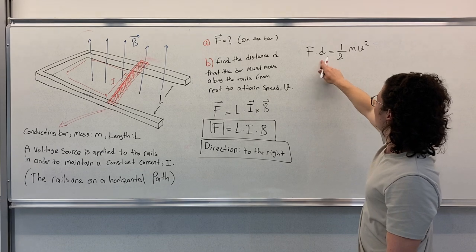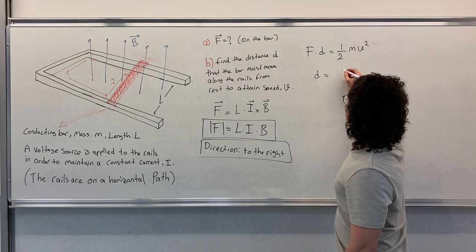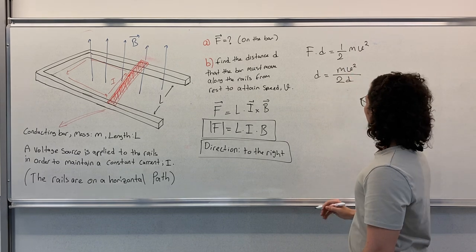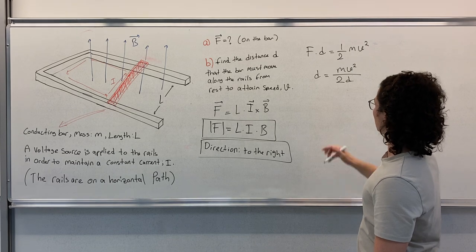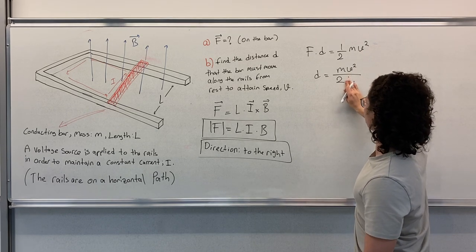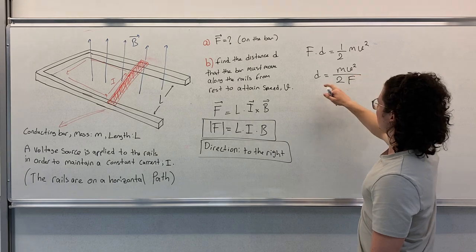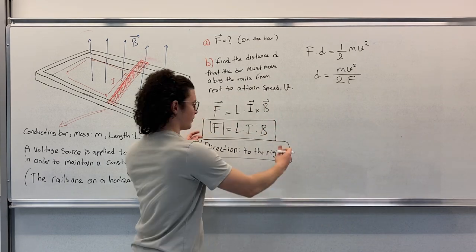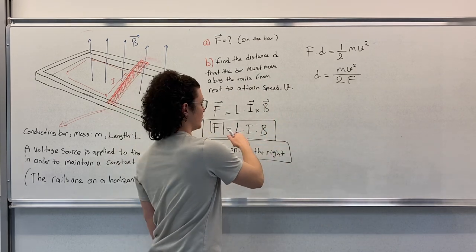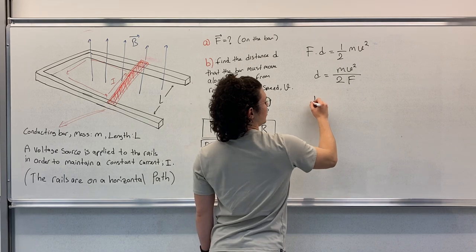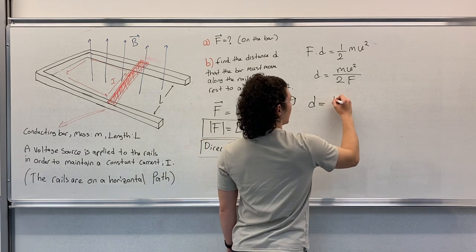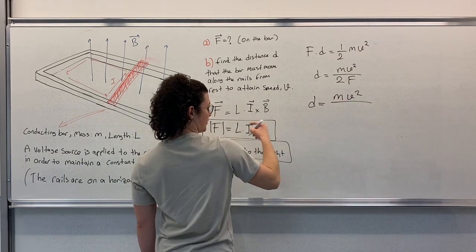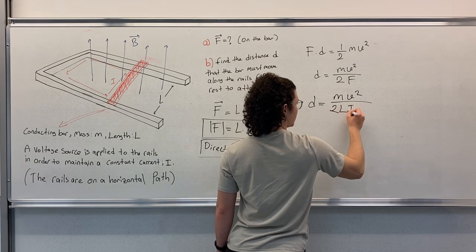So we obtain D as M V squared over 2F. We know F from part A, so let's substitute this value: D equals M V squared over 2 L I B.